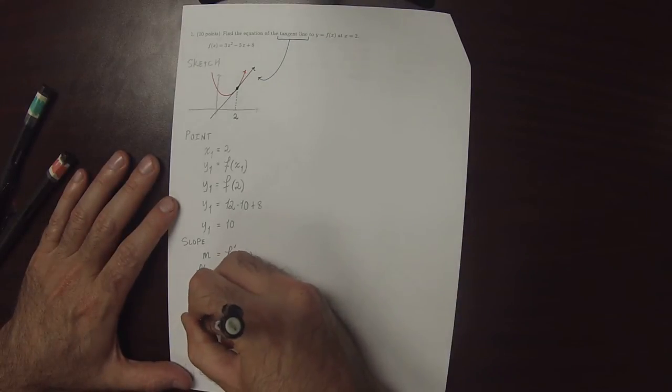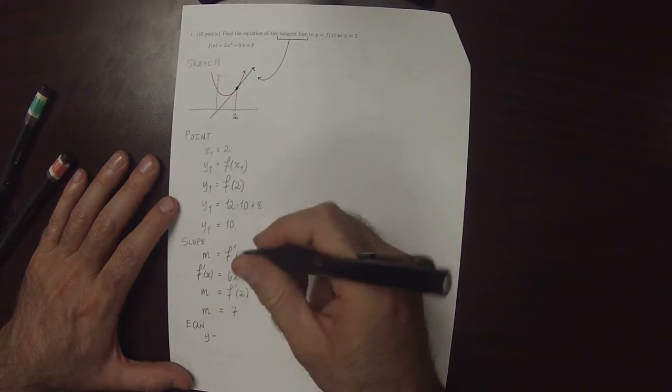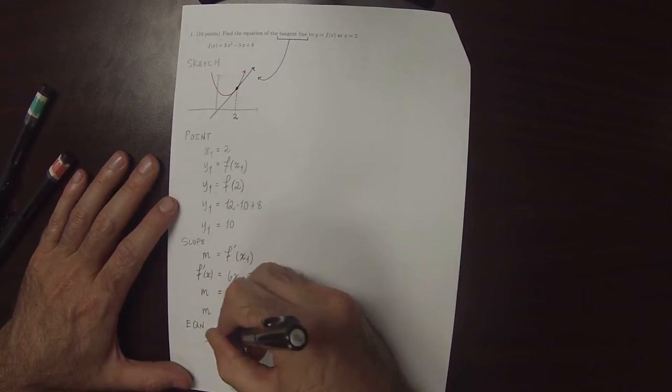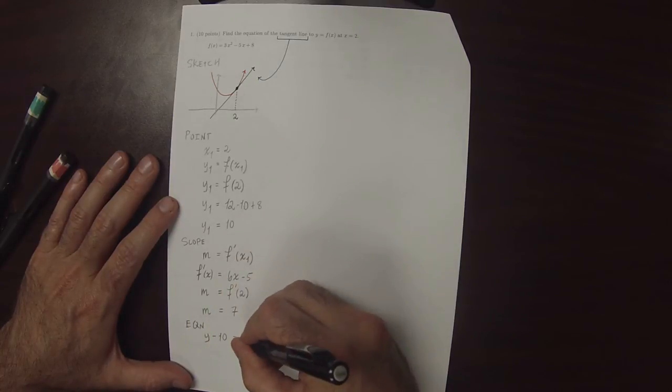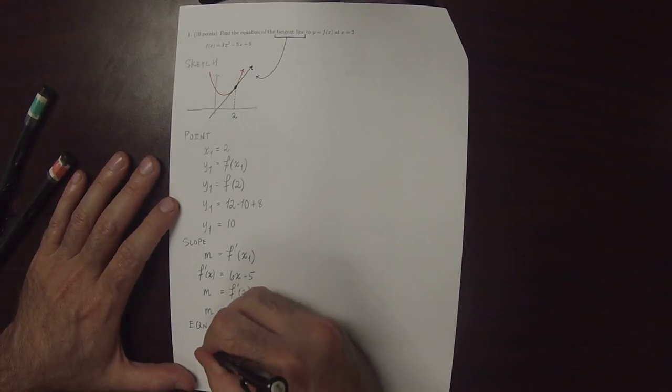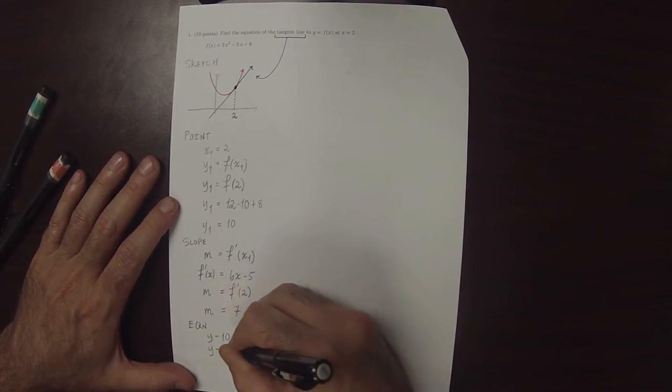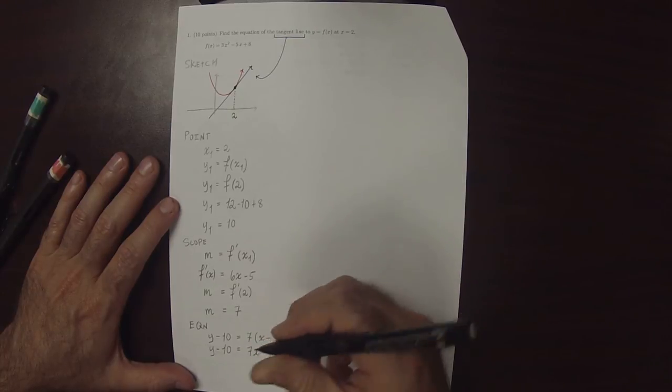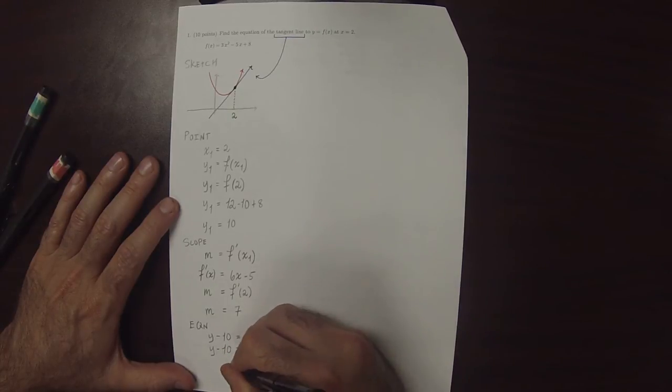As a result, the equation is y minus y1 is m multiplied by x minus x1. Simplifying a little bit, y minus 10 is 7x minus 14. So, y is 7x minus 4.